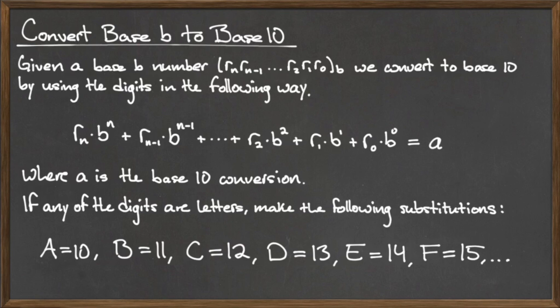Remember that any base B uses exactly B symbols, depending on the value of the base B. However, numbers like 10, 11, 12, and so on, are actually comprised of two separate digits. For example, the number 10 is actually the digits 1 and 0, 11 is the digits 1 and 1, and so on.